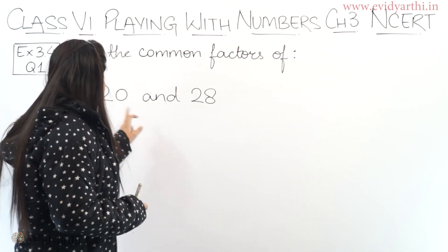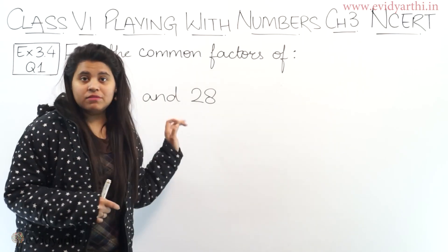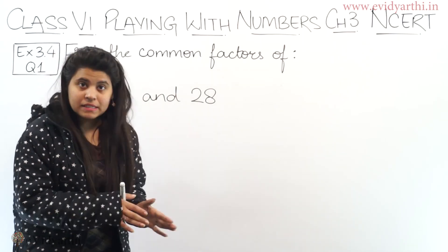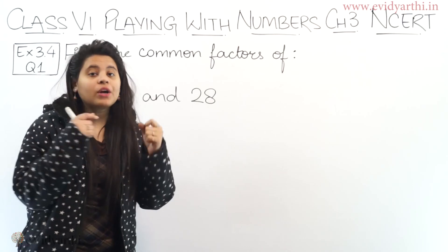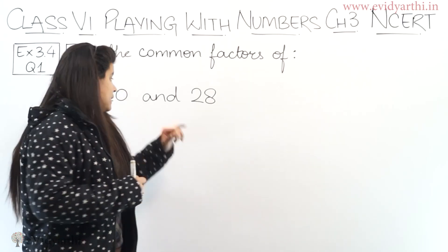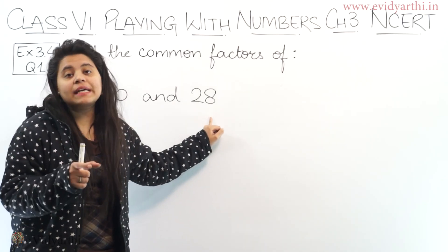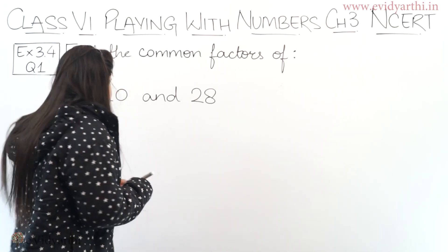Common factor means: here you have two numbers given. You will write these two numbers, then you will write the common factors — the numbers that are factors of both are their common factors.